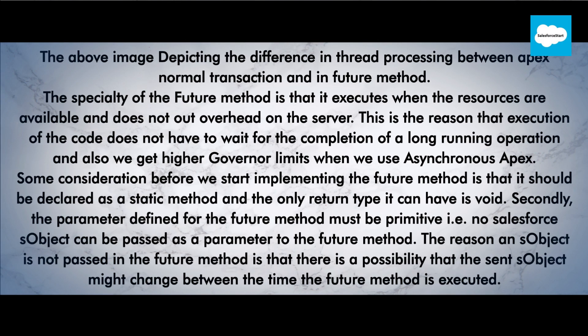The above image depicts the difference in thread processing between an Apex normal transaction and a future method. The specialty of the future method is that it executes when resources are available and does not put overhead on the server. This is why the execution of the code does not have to wait for the completion of a long-running operation, and we get higher governor limits when we use asynchronous Apex.